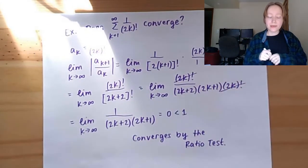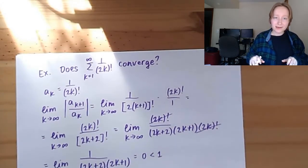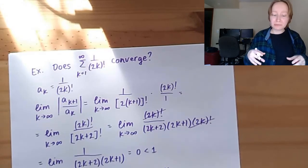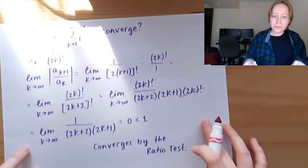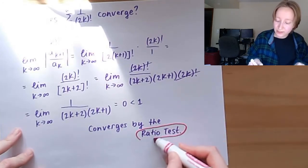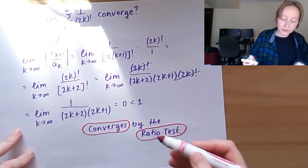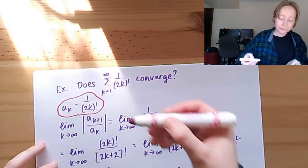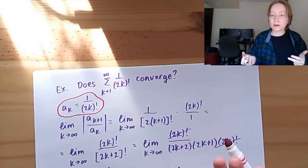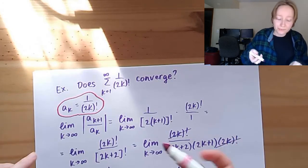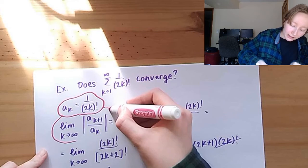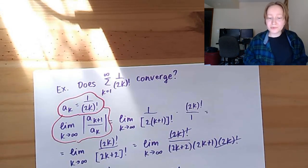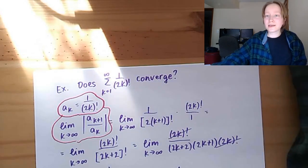A few final notes: since we have many different tests — including the limit comparison test, which looks similar — it's important to communicate clearly. Always state which test you're using (e.g., the ratio test), state your generic term a_k so it's clear what you're substituting k+1 into, show the limit of the ratio, and state your conclusion about convergence or divergence.